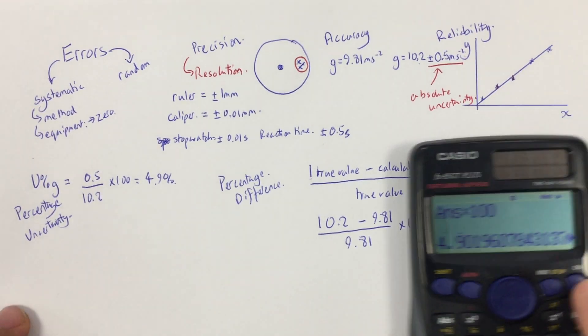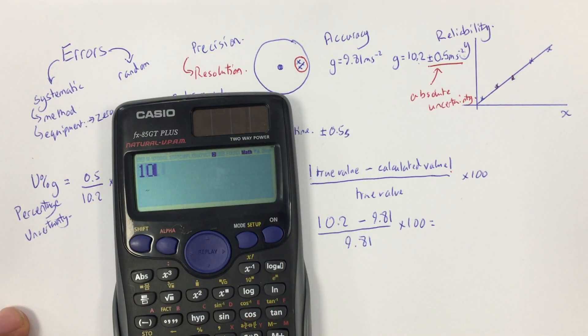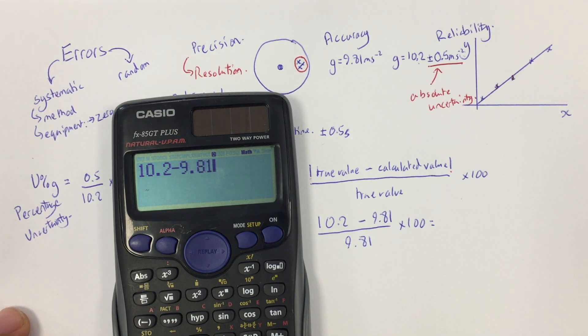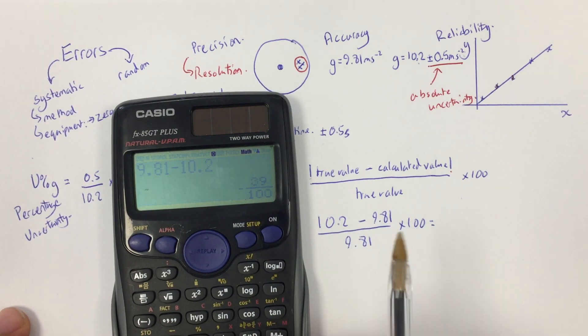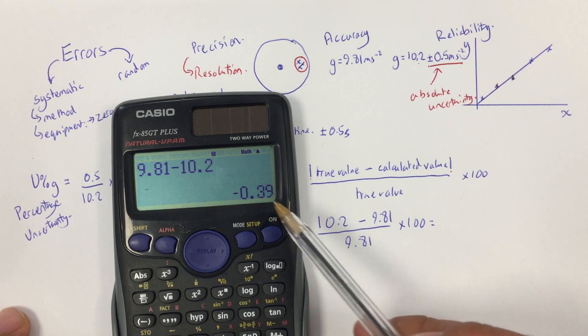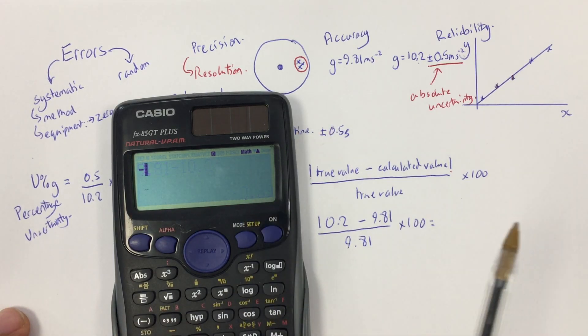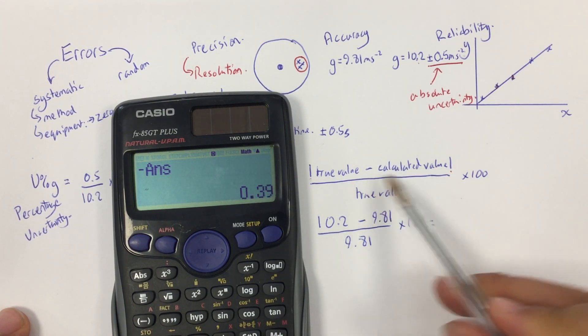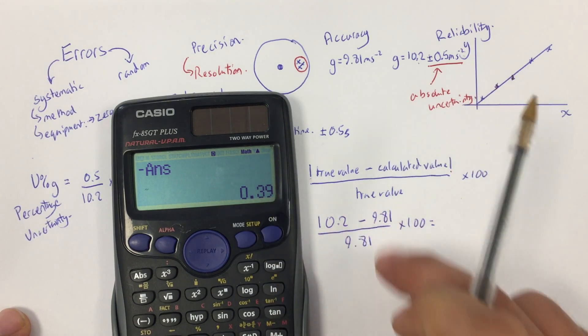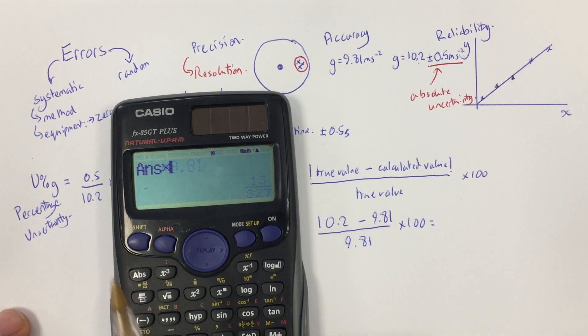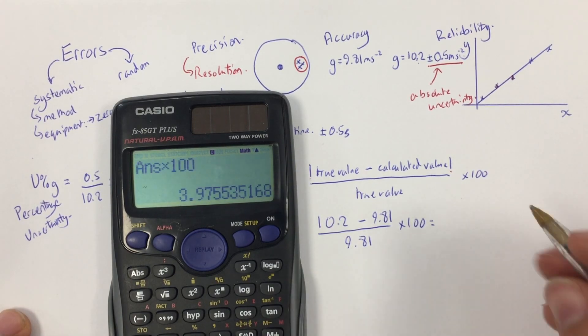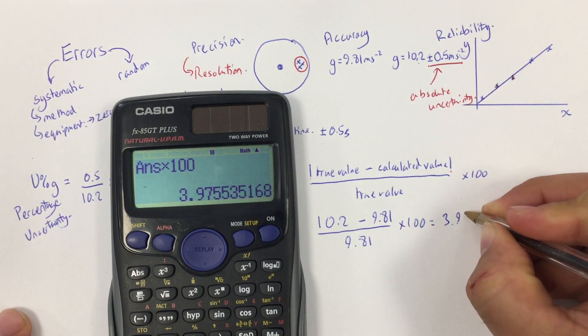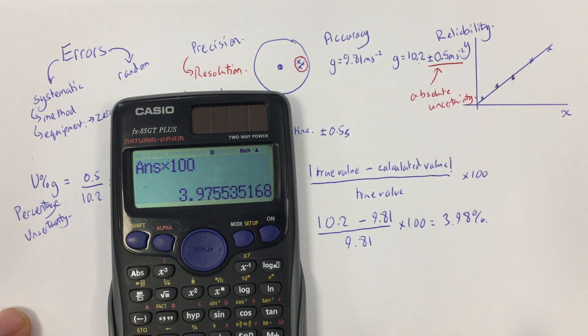So, let's do that on the calculator. So, 10.2 minus 9.81. That gives me a difference of 0.39. Now, if I did it the other way around, 9.81 minus 10.2, then I obviously get minus 0.39. I just ignore the minus, which I can get rid of by doing that answer. So, then I get my number. So, you can't have a minus answer for that top part. So, it's just the difference between them, and then divide that by the true value times 100, and then we get a percentage difference of 3.98%. Approximately 4%.